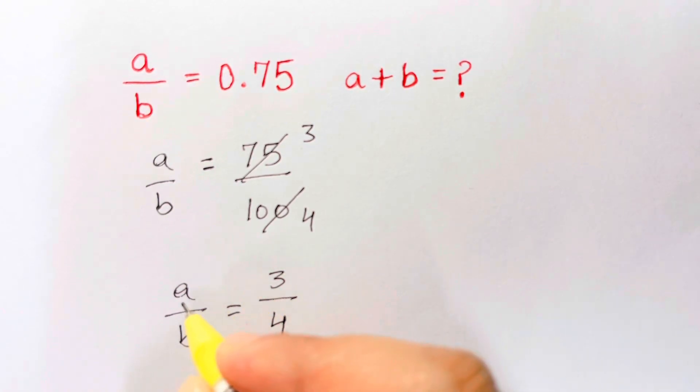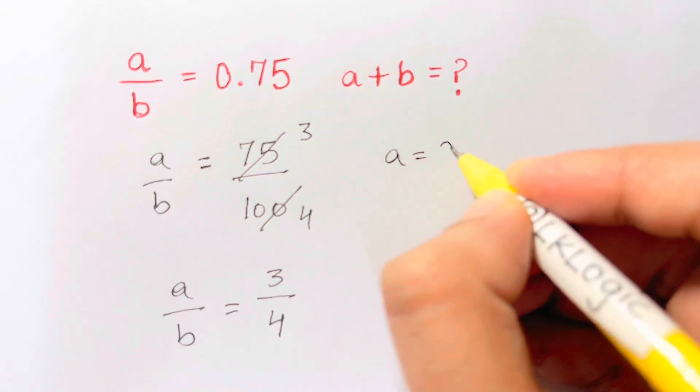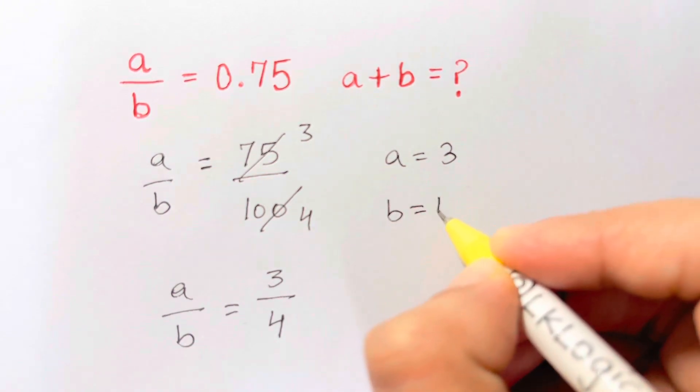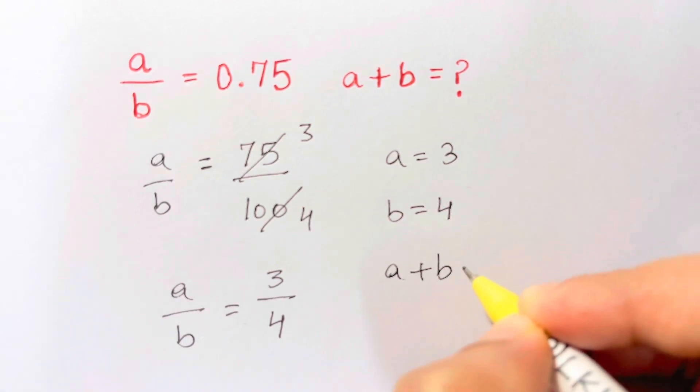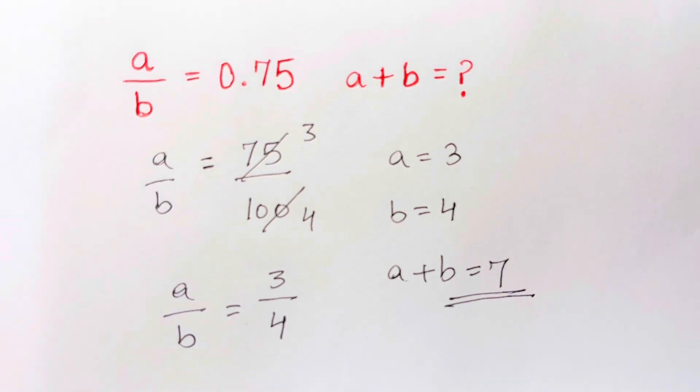Here we have a is equal to 3, is that right? And b is equal to 4. So what is a plus b? a plus b is 3 plus 4, which is 7. That's your answer. Thank you so much.